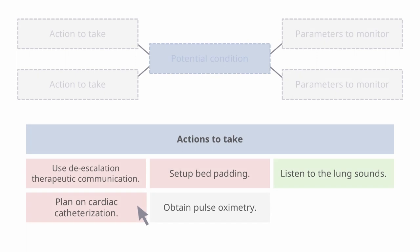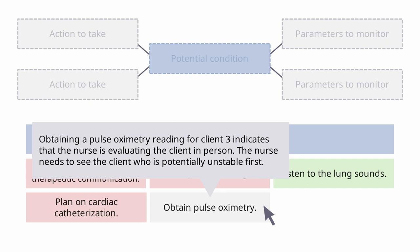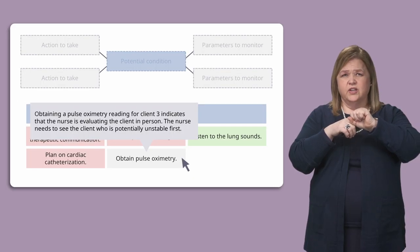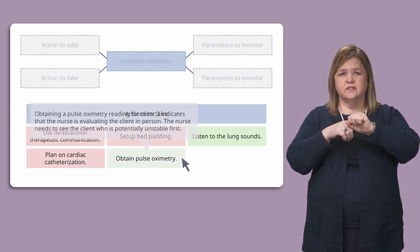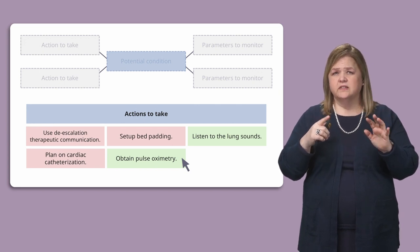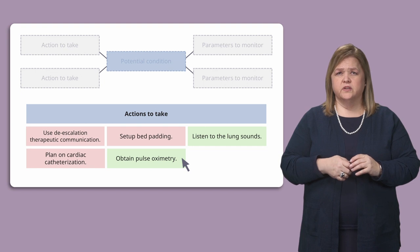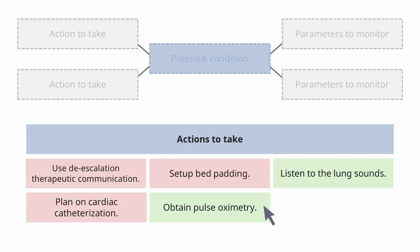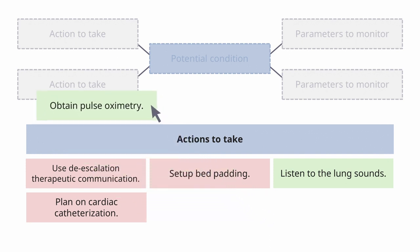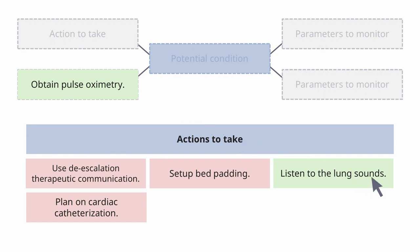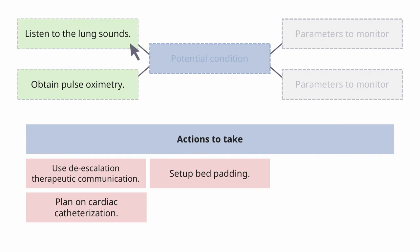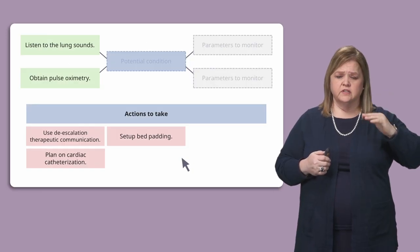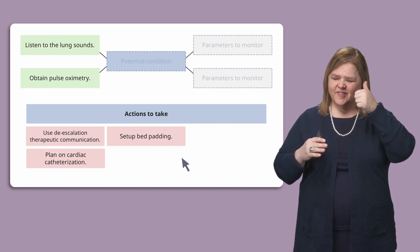Fifth option: obtain pulse oximetry — checking oxygenation by placing it on the patient's finger, which tells us the saturation of their hemoglobin. That sounds like a great idea for someone having respiratory distress. So looking back at all five options, the two we've selected are: listen to lung sounds, and obtain pulse oximetry. Does that make sense for client three? Yes. That's the key — when you spend time upfront identifying the priority patient, the rest of the question flows smoothly.